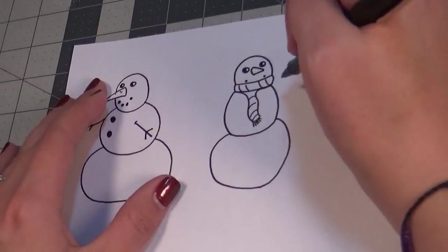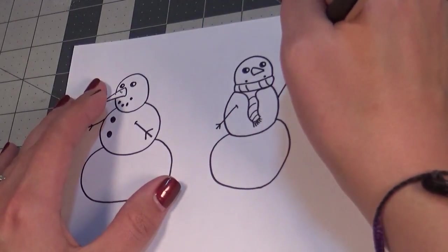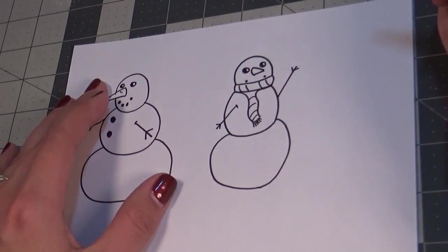And then, once again, add a couple of arms. I'll have this guy be kind of waving at you. Holla! And there's a snowman with a scarf.